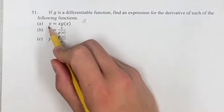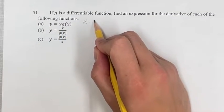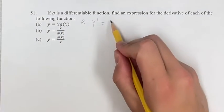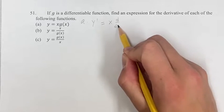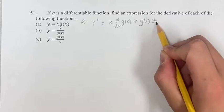So for a, we're given that y is equal to x times g of x, so the derivative, we can use the product rule. So we're going to have x times the derivative of g of x plus g of x times the derivative of x.